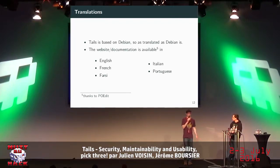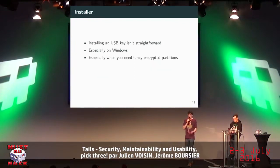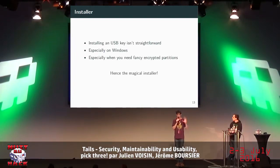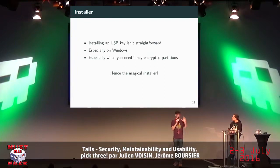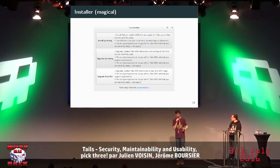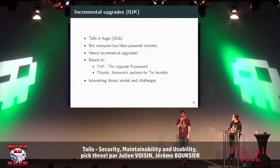To use Tails you need to install it, and that's not always easy — especially on Windows, or if you need an encrypted partition, which can be a nightmare. To make life easier for every user there's a magical installer. It's a simple Java app with three buttons: you can choose to copy from an existing Tails USB, create a second one, or upgrade. Everything is easy — you just click a button, plug in your key, and it's done.